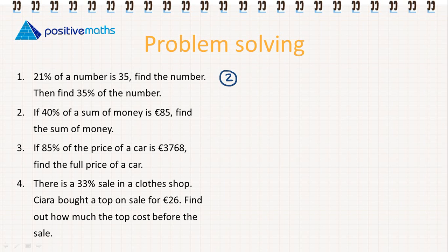Let's look at part two. 40% of the number, so 40% is equal to 85 euro. We need to find the full sum of money. We're looking for 100%. Again, we find 1% first. Then we find 100%.